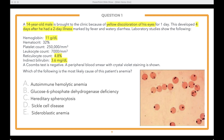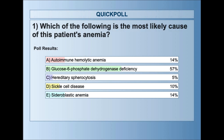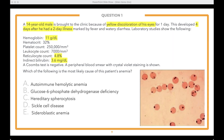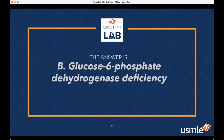Over half of you went with answer choice B — glucose-6-phosphate dehydrogenase deficiency — with a tie between A and E for second place, and a few choosing sickle cell disease and hereditary spherocytosis. Let's hide the results and reveal the answer. The answer is B! Congratulations — the community wins on question number one. If you didn't get it right, that's okay. Abraham will walk through this one for us.